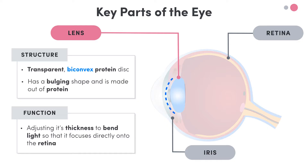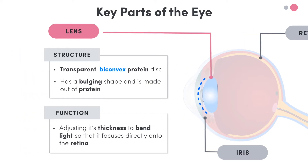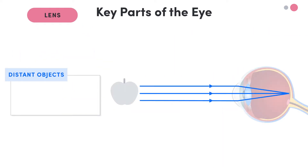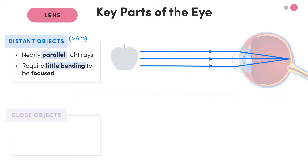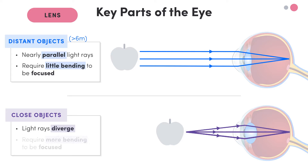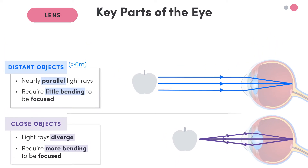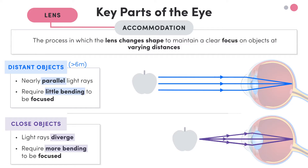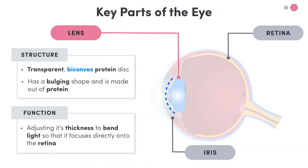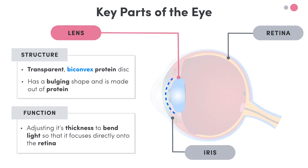The lens is able to bend the light entering the eye by adjusting its thickness. This is because light waves from the environment enter the eye at different angles, based on how far away the object is. Light rays from distant objects are nearly parallel and require little bending to be focused, whilst light rays from near objects diverge and require more bending to be focused. We refer to this process in which the lens changes shape to maintain a clear focus on objects at varying distances as accommodation. Overall, just remember that the lens's job is to help us deal with objects at different distances.